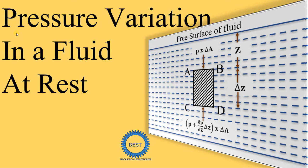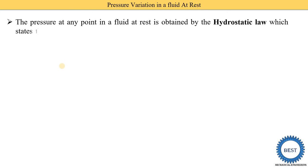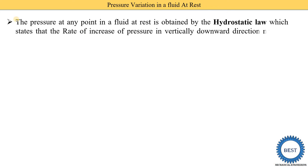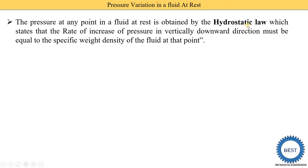In this video, we derive the equation for pressure variation in a fluid at rest — meaning we derive what is the change in pressure when the fluid is at rest with no velocity. For that, we need to understand the hydrostatic law. The pressure at any point in a fluid at rest is obtained by the hydrostatic law, which states that the rate of increase of pressure in the vertically downward direction must be equal to the specific weight density of the fluid at that point.